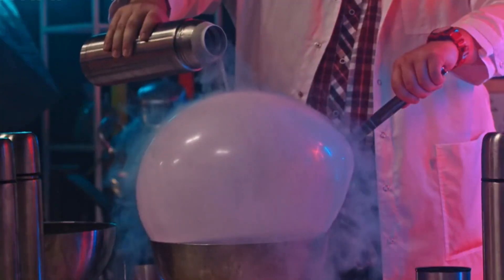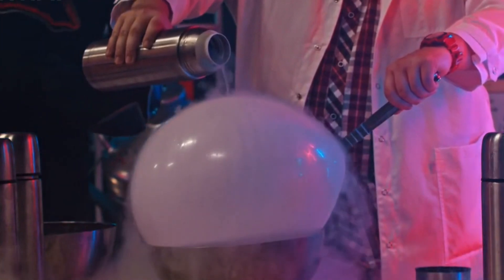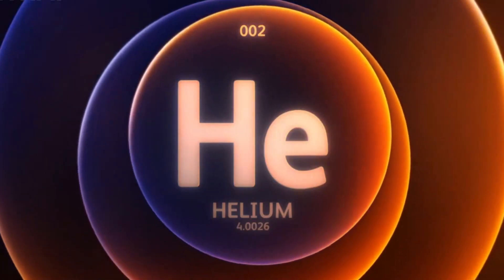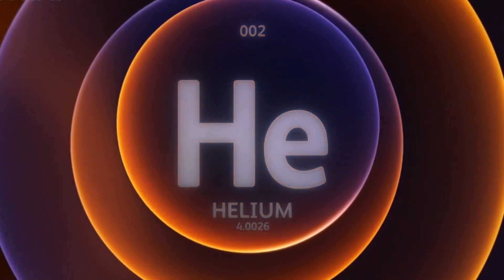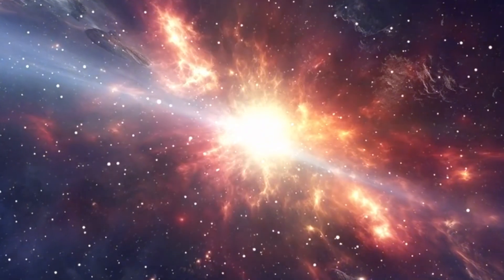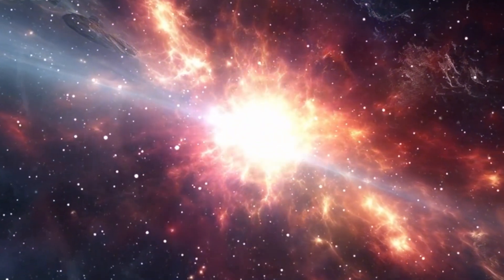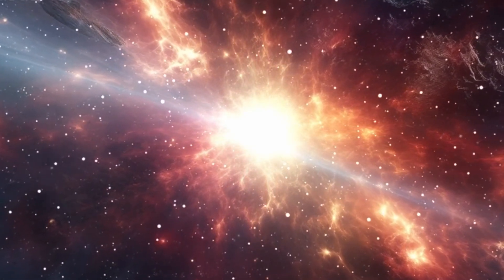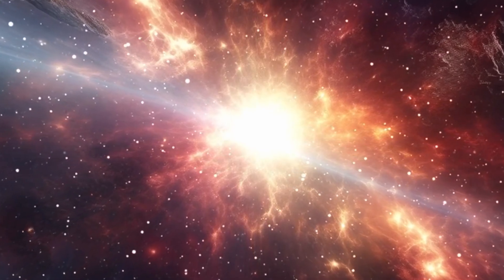Currently, Betelgeuse is fusing helium into carbon and oxygen in its core, having long ago exhausted its hydrogen. Once it has no more helium, it will begin fusing heavier elements, leading up to iron. This process does not release energy; instead, it accelerates the star's collapse, eventually triggering a supernova, a spectacular cosmic explosion that will mark Betelgeuse's end and its transformation into something new.